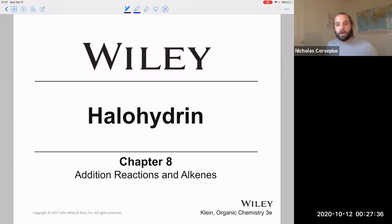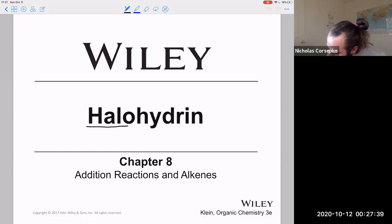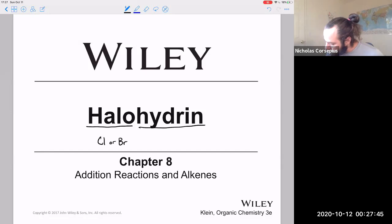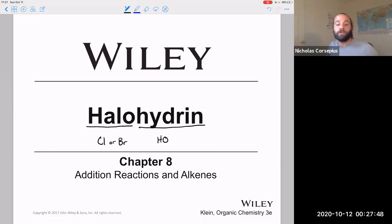Next reaction are halohydrin reactions. Halo meaning we're going to be adding a halogen — so chlorine or bromine for example — and hydrin, from hydration, meaning the other group is going to be an OH group.